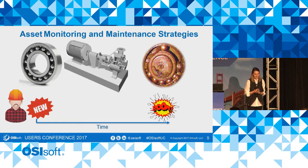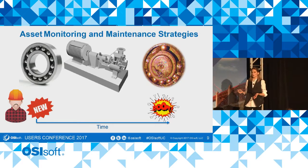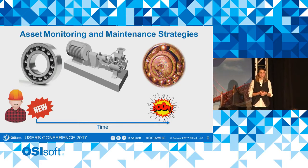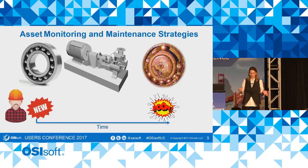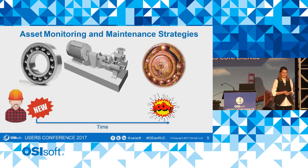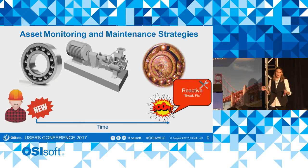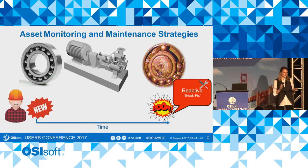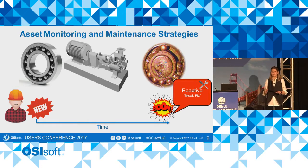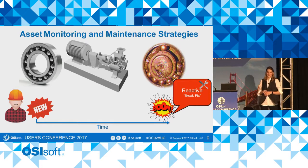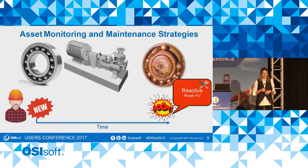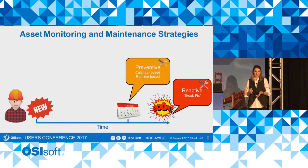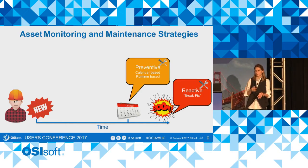Mike doesn't look very happy at all, probably because he has to call a maintenance crew now to get the pump repaired. He also expects significant downtime, as well as a call from his manager, because Mike's process is completely offline. This strategy is very common and it's called reactive maintenance, or run-to-failure. In fact, this is not the first time the bearing failed — it happened five months ago with the same pump. Mike is a smart guy, so he realizes that he can schedule maintenance before the pump fails. Now he's going to implement calendar-based maintenance and schedule maintenance every four months, hopefully to prevent the failure.